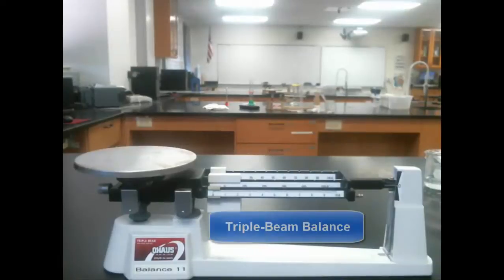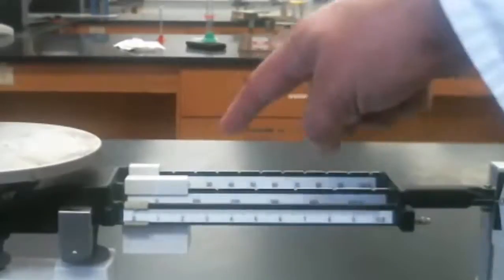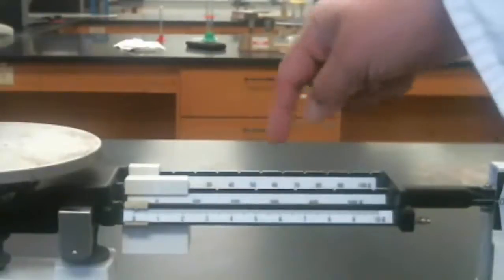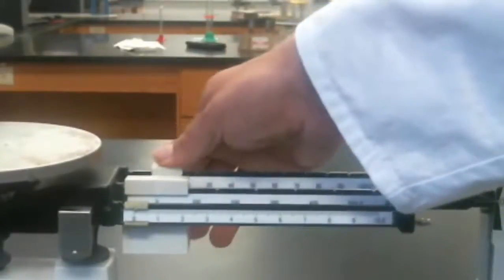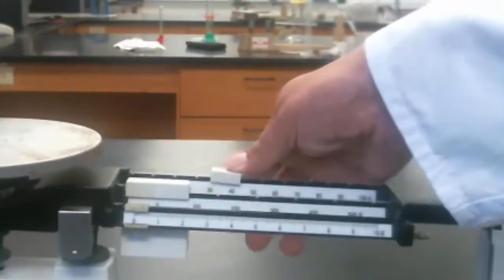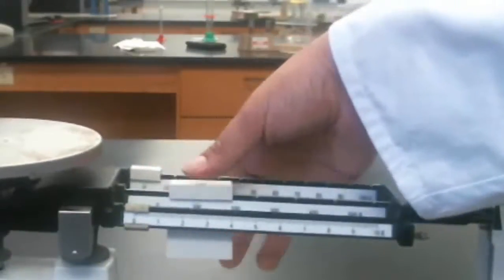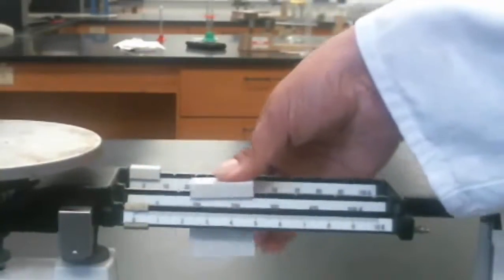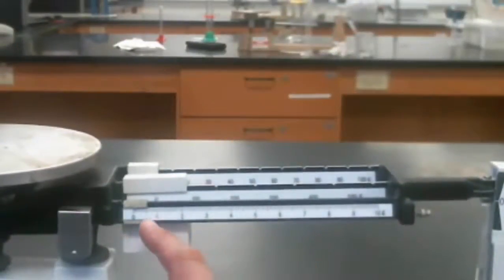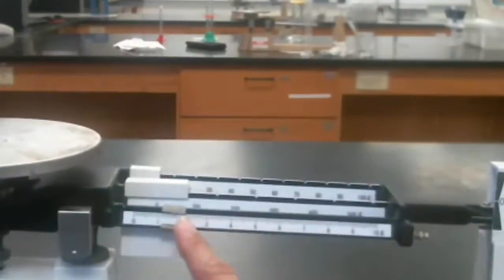This is the triple beam balance. It's called a triple beam balance because it has three beams, and on these beams are some sliding weights. The beam in the back measures 10 gram increments. As I slide this weight down, you'll hear it lock into place every 10 grams. The one in the middle is every 100 grams, a much larger slider. And the one down here is a single gram slider, also divided up into tenths. This one just slides freely up and down the beam.